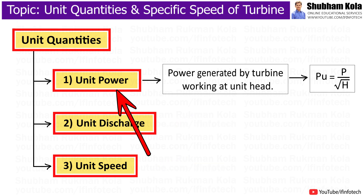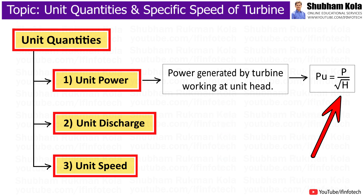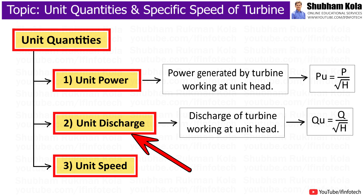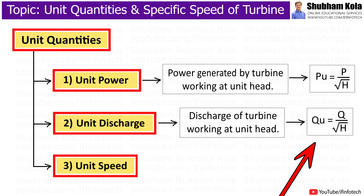Unit power of a turbine is the power generated by the turbine working at unit head, where H is the available head to the turbine and P is the power generated by the turbine at a given head. The unit discharge of a turbine is the discharge of the turbine working at unit head, where Q is the discharge of the turbine at a given head.